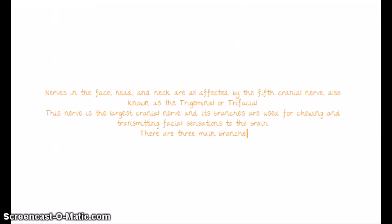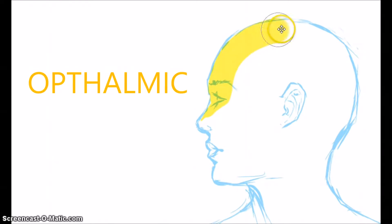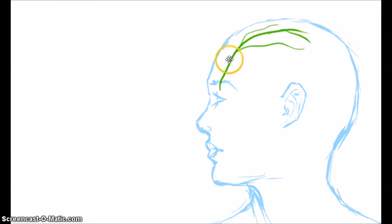There are three main branches. The first branch is the ophthalmic. It's the top one-third of the face and divides into three parts. The superorbital, which affects the upper eyelid, eyebrow, forehead, and scalp.